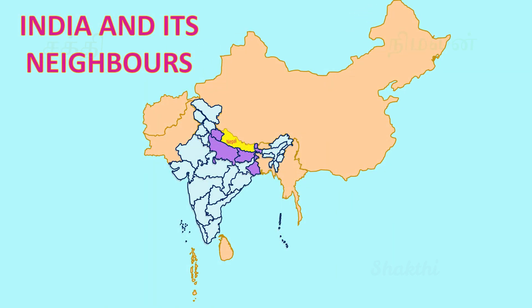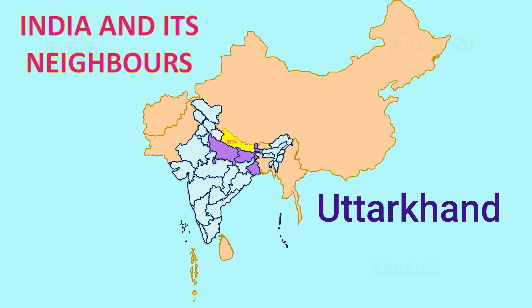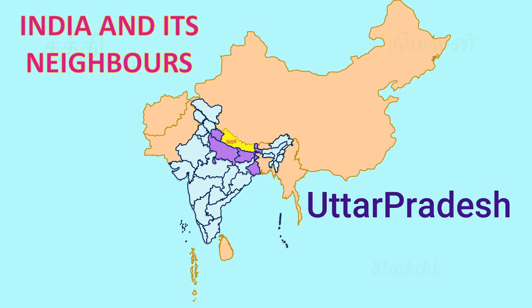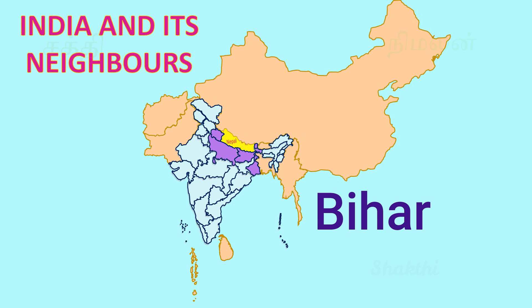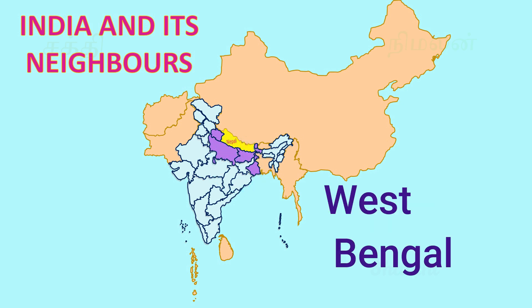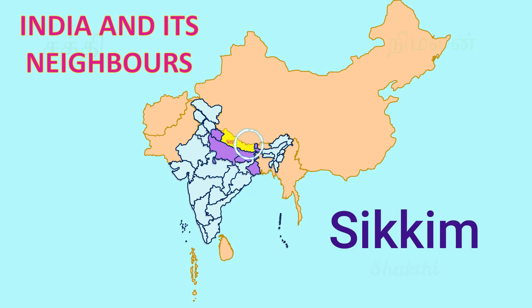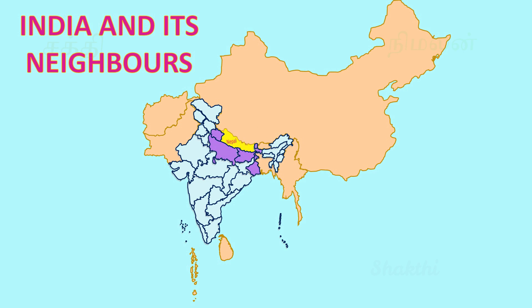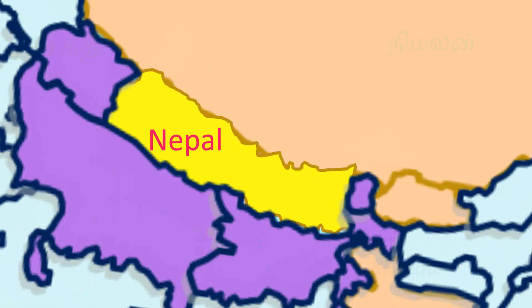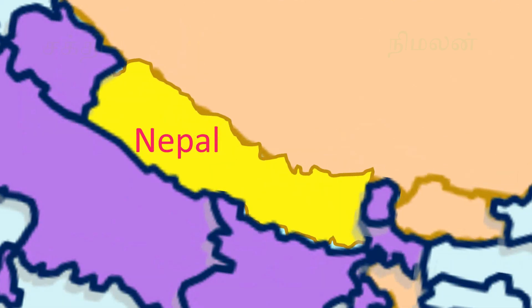The Indian states Uttarakhand, Uttar Pradesh, Bihar, West Bengal, and Sikkim share some boundaries with Nepal.